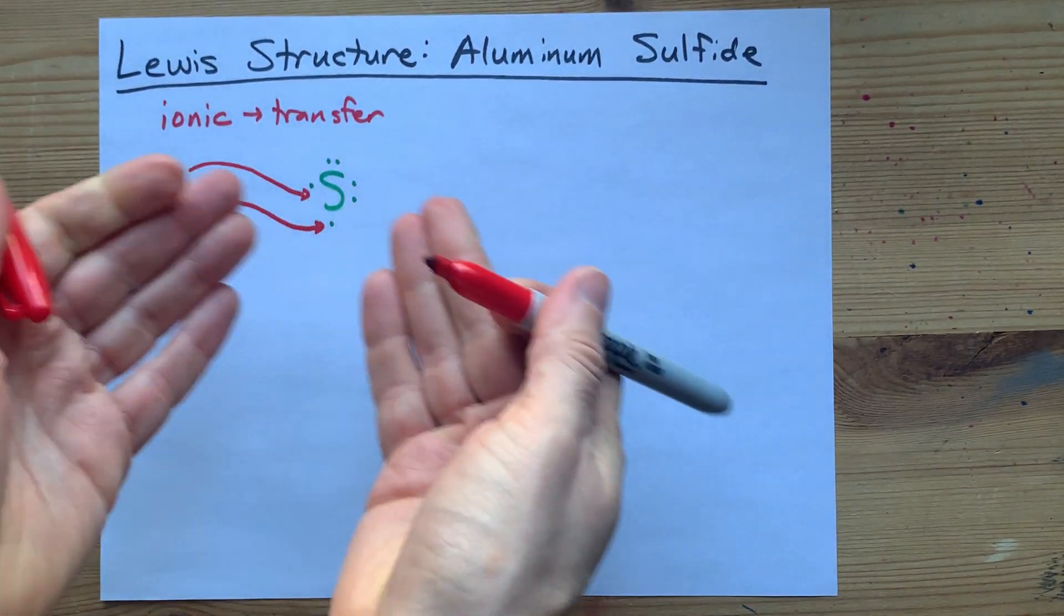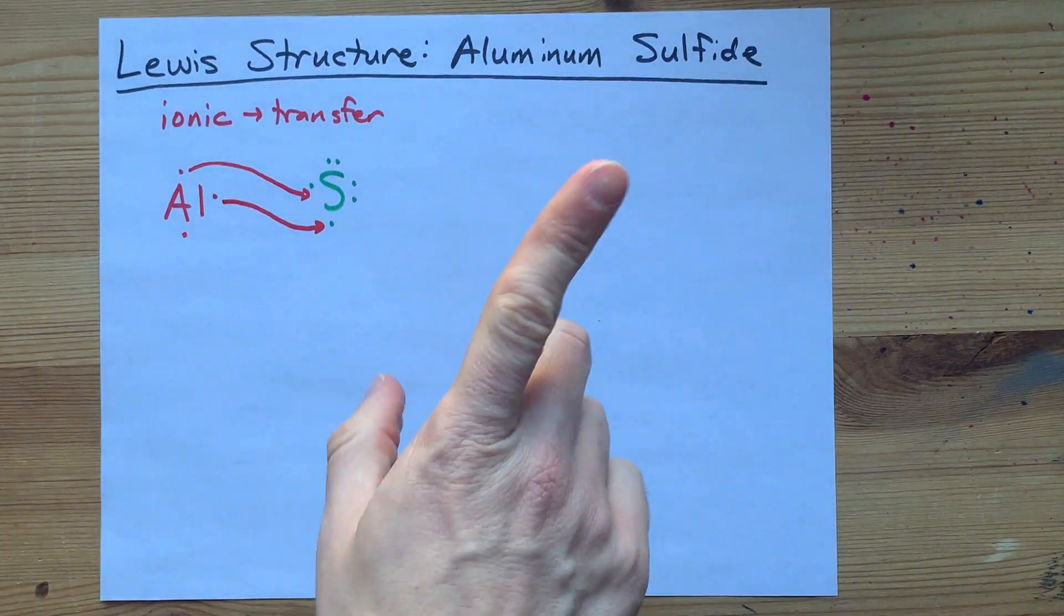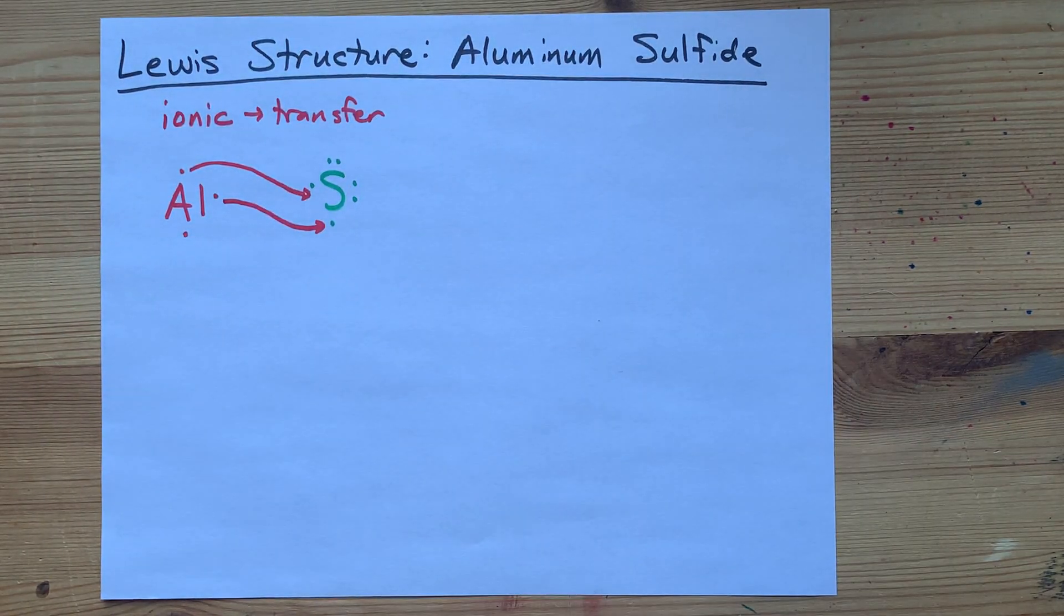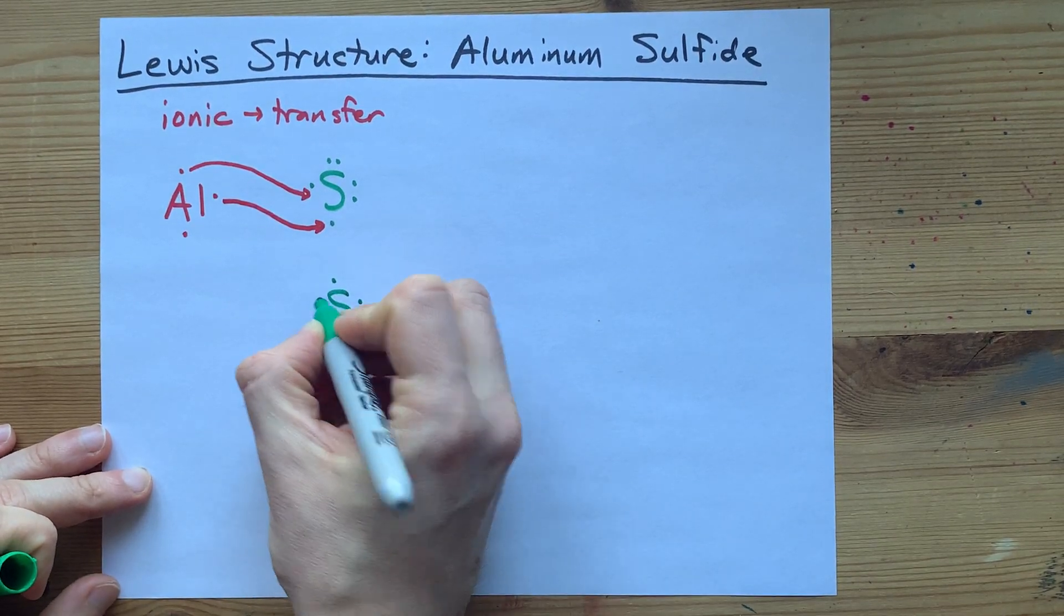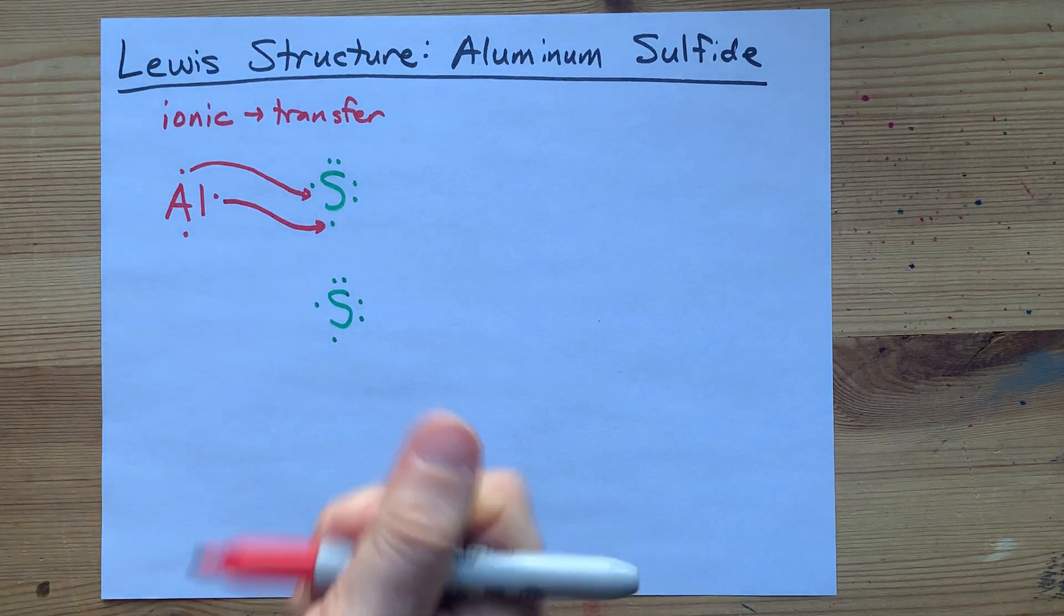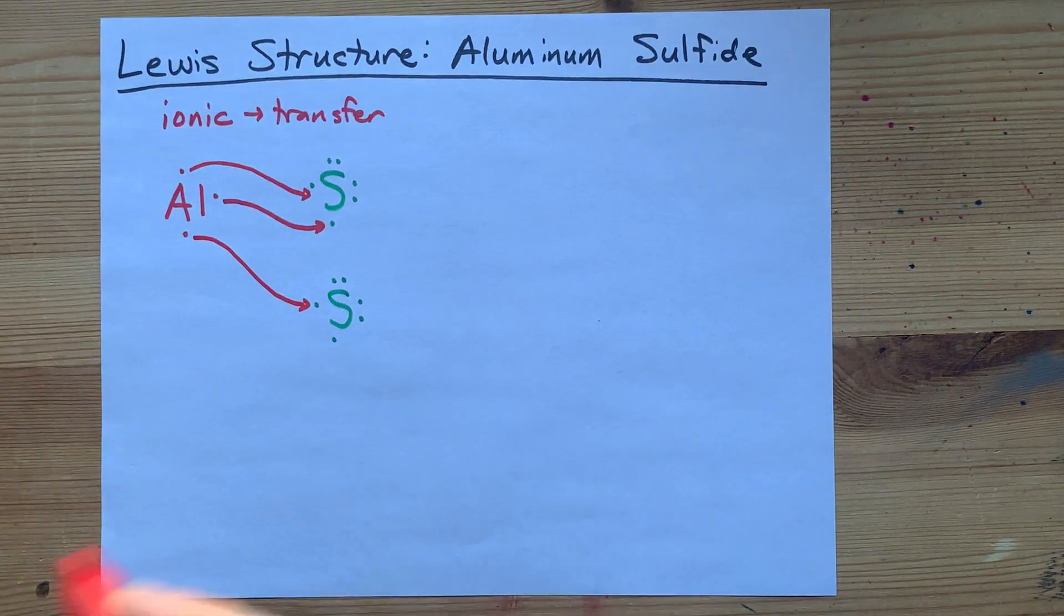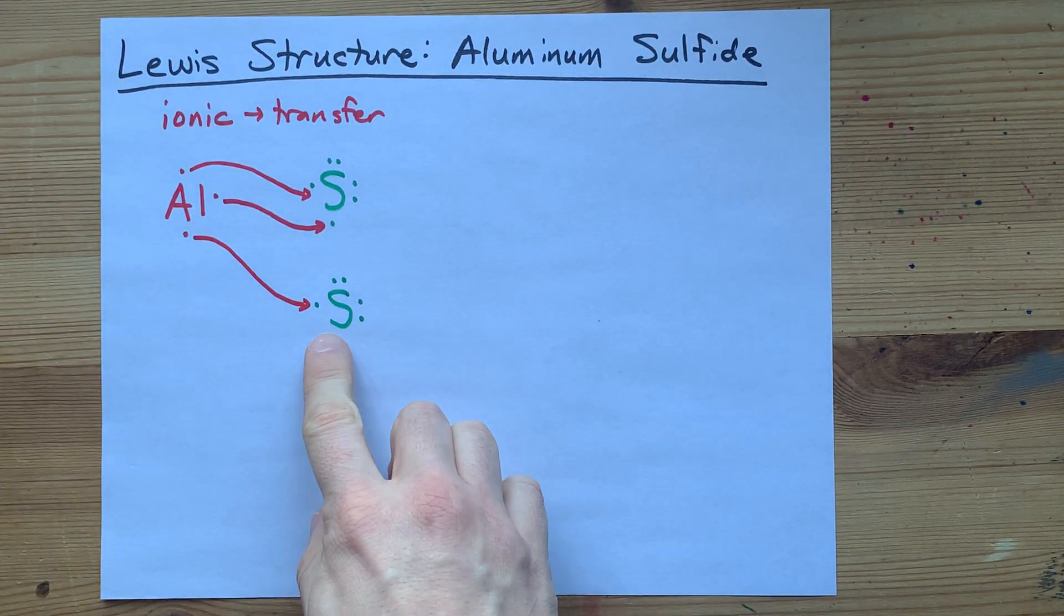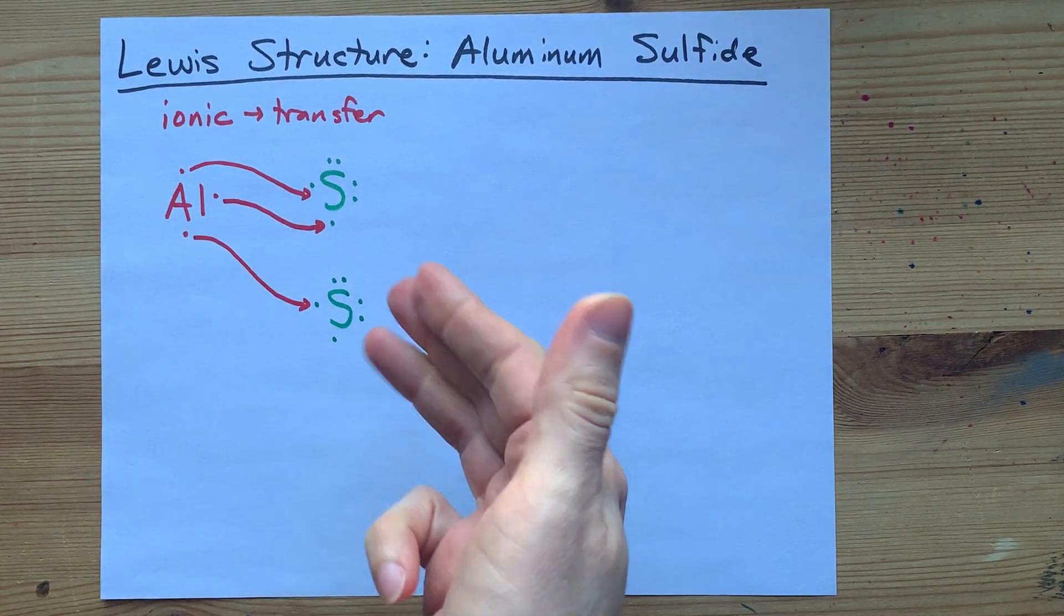Beautiful. Now the sulfur has eight electrons and is stable, but we still have an electron on aluminum. Where's it going to go? Well, the answer is bring in another sulfur atom. One, two, three, four, five, six valence electrons. And that will give that electron a place to go. There we go. Now that aluminum's happy. It's given away all its electrons. But alas, this sulfur brought six and gained one. That's still only seven electrons.